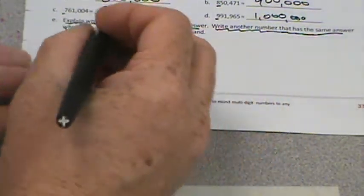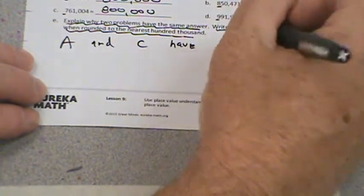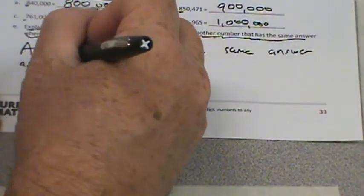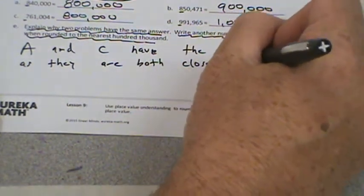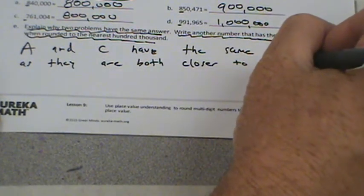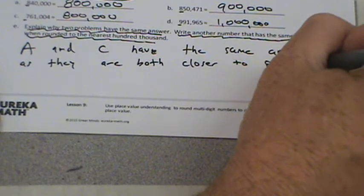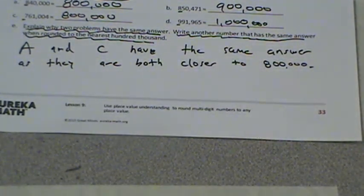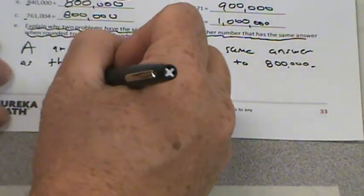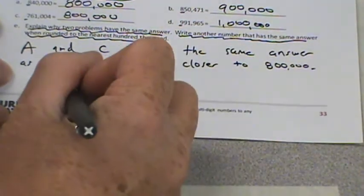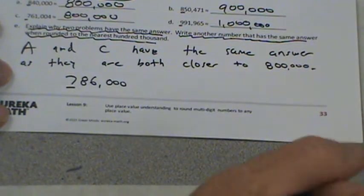Explain why two problems have the same answer. Write another number that has the same answer when rounded to the nearest hundred thousand. A and C have the same answer as they are both closer to 800,000 than the other endpoint. Now let's come up with another number that could be rounded to 800,000. How about 786,000? If we were rounding to the nearest hundred thousand, we would round that to 800,000. You bet we would.